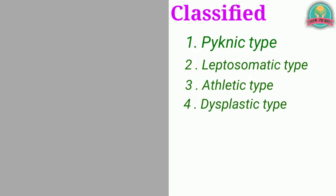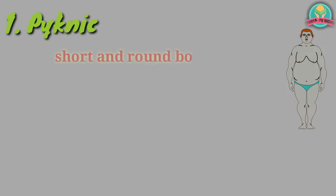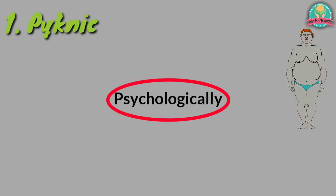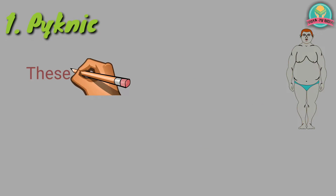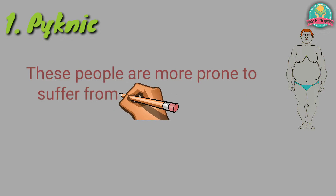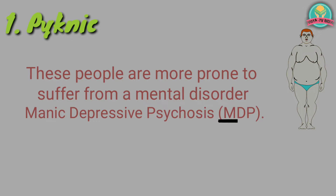Now we will try to understand these types one by one. Number 1: Picnic type. These are people who have a short and round body. They will have personality traits of extroverts. Psychologically the picnic is sociable, jolly, easy going, and good-natured. These people are more prone to suffer from a mental disorder called manic depressive psychosis (M.D.P.).